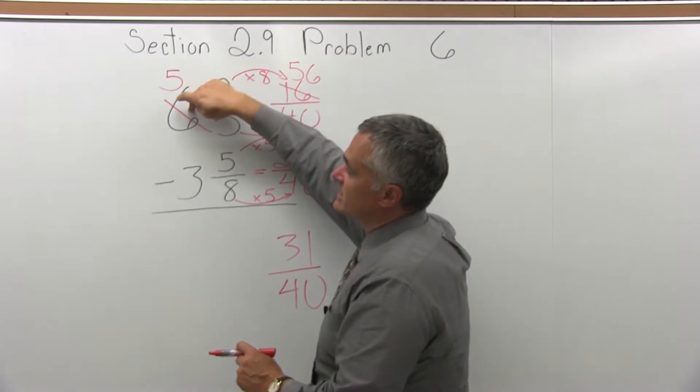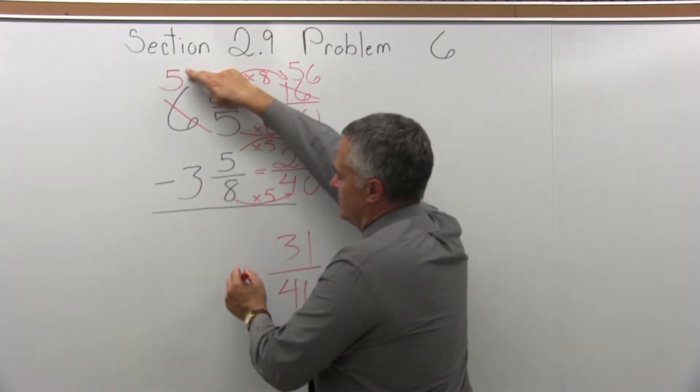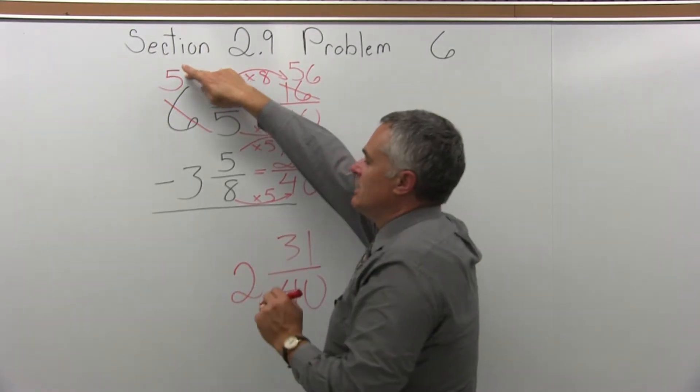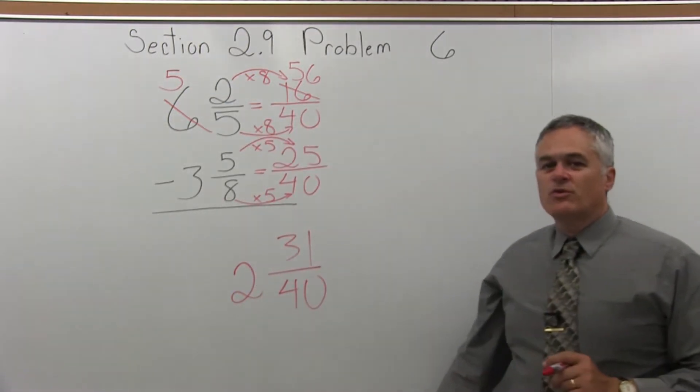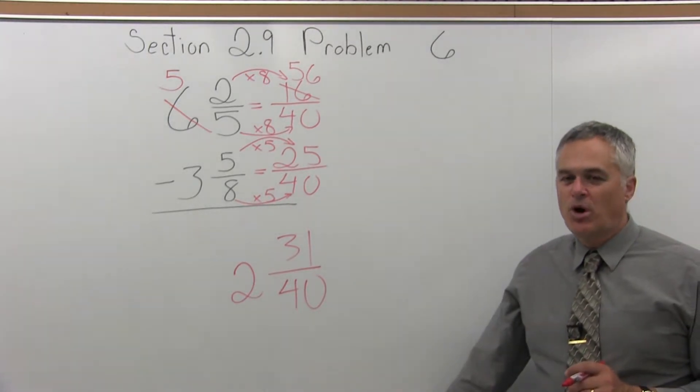Subtract the whole numbers. Don't forget it's not a 6 anymore, we reduced it to a 5 so we can borrow. 5 minus 3 is 2. 2 and 31/40. Now that's the answer.